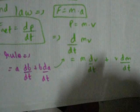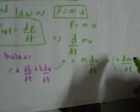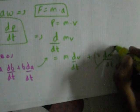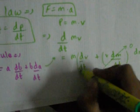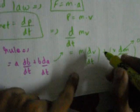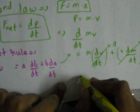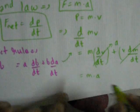we get m dv by dt plus v dm by dt. Basically, in most of the cases, we take mass as constant. That is, change in mass is zero. So this term goes zero. And we all know that differentiation of velocity with respect to time gives us acceleration. So it equals mass times acceleration.